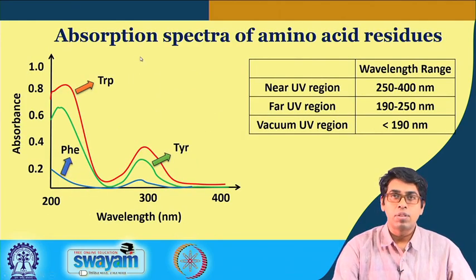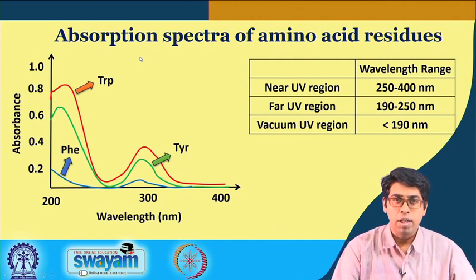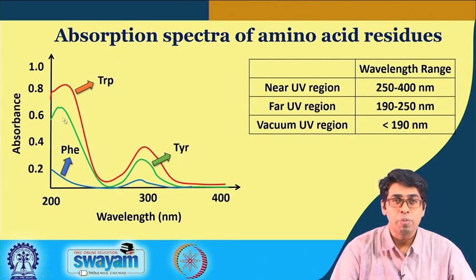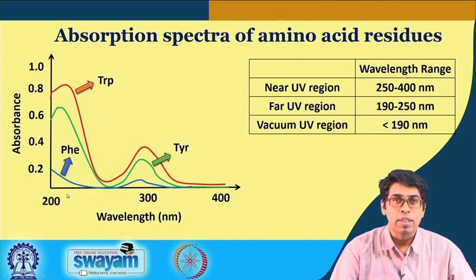If we look at an individual amino acid not in the context of a protein — for example, as we did in the lab where we made solutions of amino acids and collected absorption spectra — curves like these are obtained. Tryptophan gives the largest intensity at around 280 nanometers versus 200 nanometers, followed by tyrosine, and phenylalanine gives the smallest intensity.